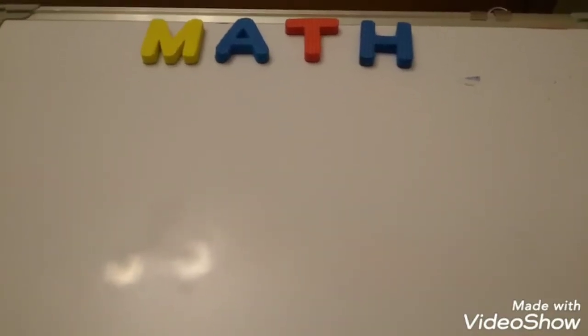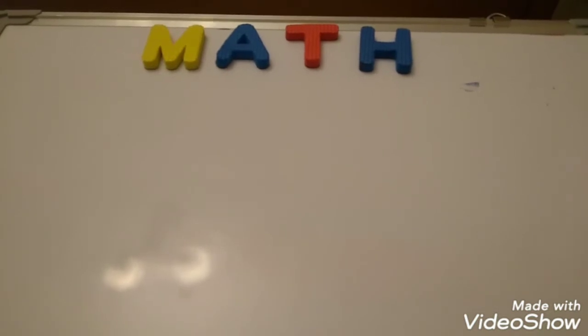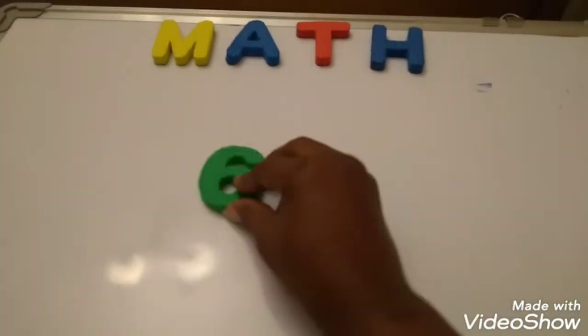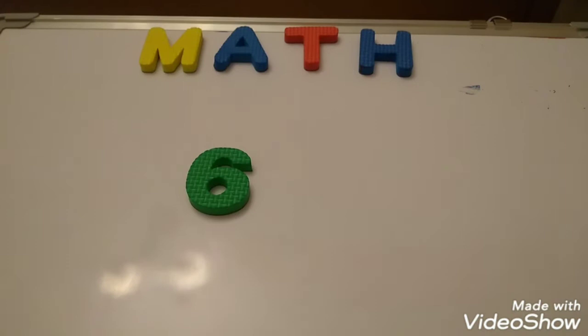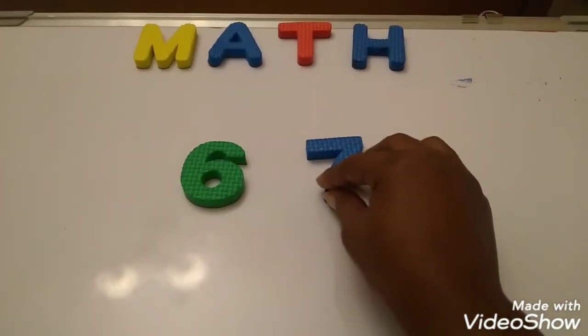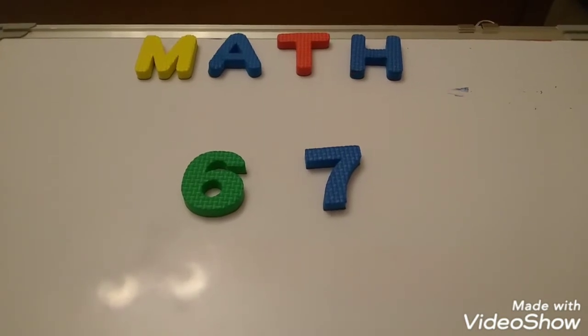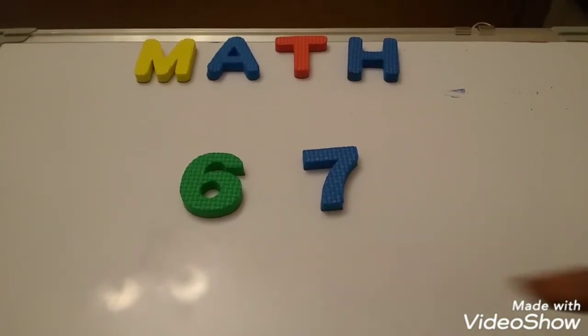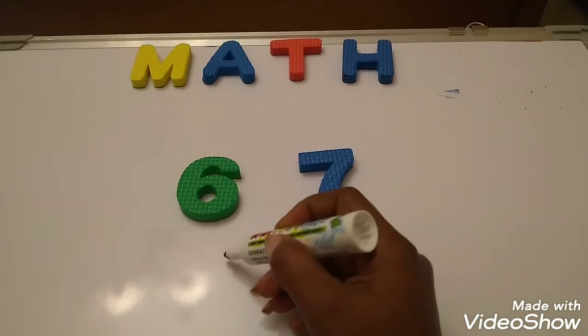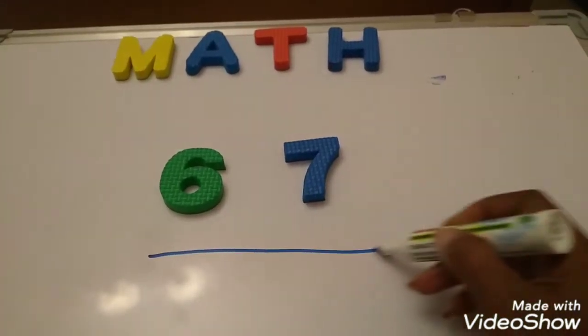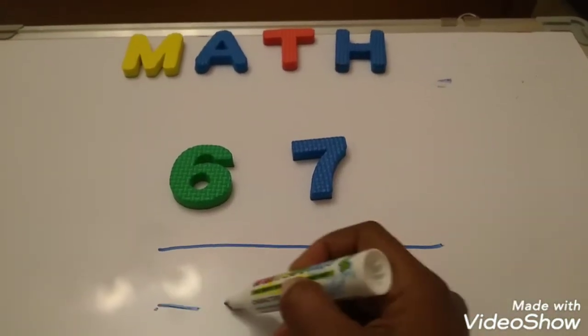It's math time. Today we're going to be talking about the numbers 6 and the number 7. When we're writing the numbers 6 and the number 7, remember we start on the magic dot.